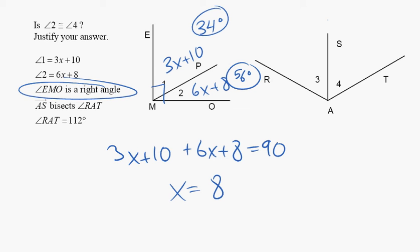AS bisects RAT, so we know that it divides into two congruent angles. So, these are both what? 56 degrees.